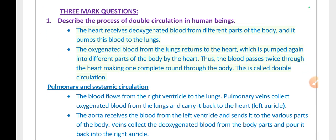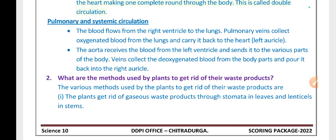Describe the process of double circulation in human beings. The heart receives deoxygenated blood from different parts of the body and pumps it to the lungs. Oxygenated blood from the lungs returns to the heart and is pumped again to different parts of the body — thus blood passes twice through the heart in one complete round. This is called double circulation. In pulmonary circulation, blood flows from the right ventricle to the lungs; pulmonary veins carry oxygenated blood back to the left atrium. In systemic circulation, the aorta receives blood from the left ventricle and sends it to all body parts; veins collect deoxygenated blood and return it to the right atrium via the superior and inferior vena cava.